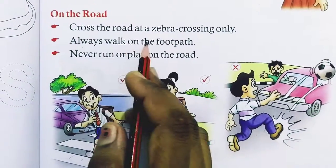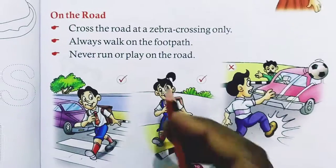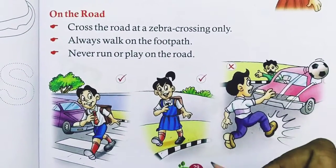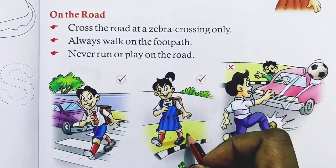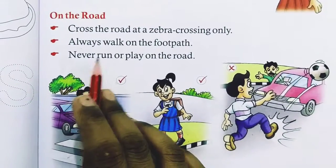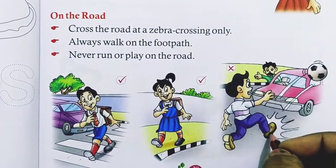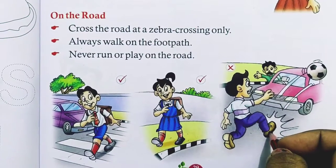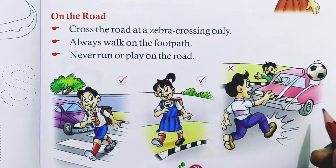Always walk on a footpath. The girl is walking on a footpath. Always walk on a footpath because cars drive on the road. Never run or play on the road — you don't need to play or walk on the road.